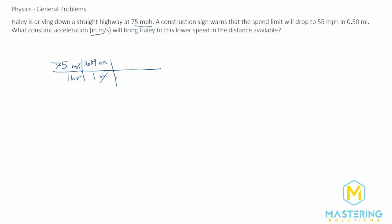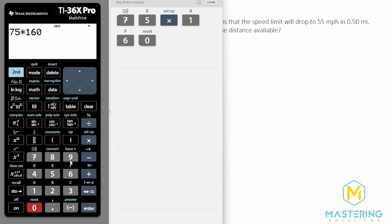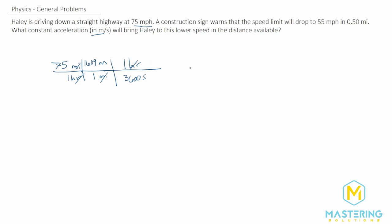The miles cancel and we're in meters per hour, so we need to convert the hour into seconds. In one hour there are 3600 seconds. The hours cancel and we're left with meters on top and seconds on the bottom. So we take 75 multiplied by 1609 divided by 3600, which gives us 33.5 meters per second for Haley's initial speed.